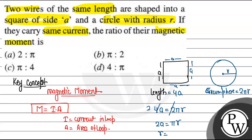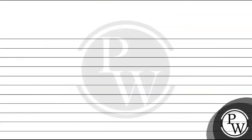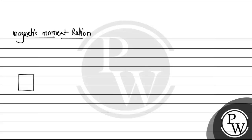From this we can define r = 2a/π. Now to find the magnetic moment ratio, let's first calculate the magnetic moment of the square. M1 = i1 × A1. Current i1 is just i (we suppose current i is flowing), and the area of the square is side squared, so M1 = i·a².